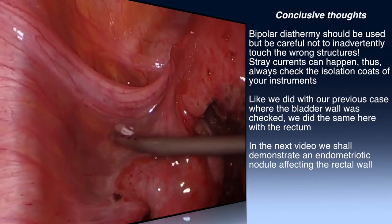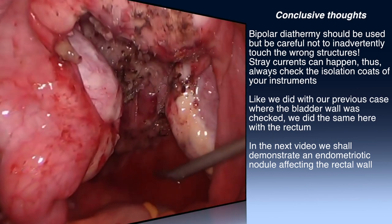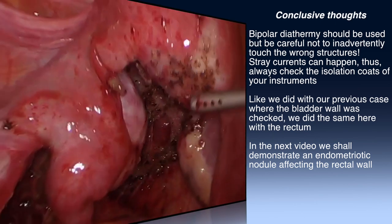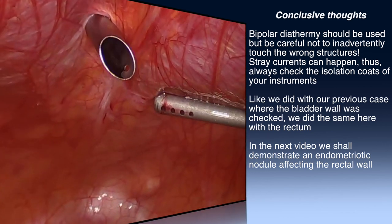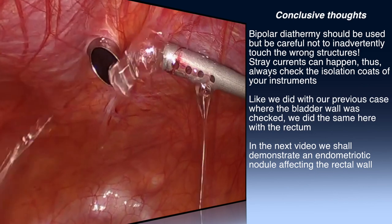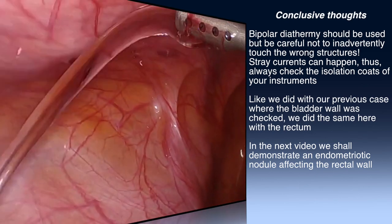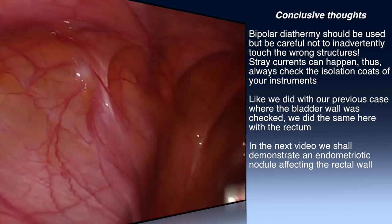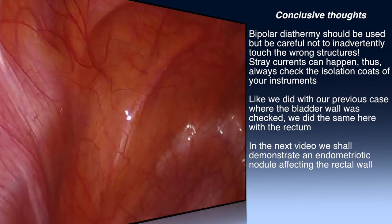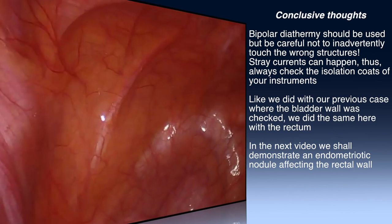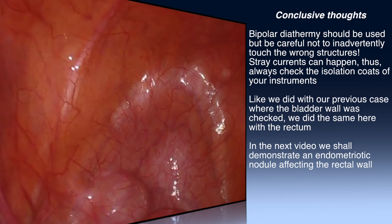Bipolar diathermy should be used but be careful not to inadvertently touch the wrong structures. Stray currents can happen, so always check the insulation coats of your instruments. Like we did in our previous case where the bladder wall was checked, we did the same here with the rectum. In the next video we shall demonstrate an endometriotic nodule affecting the rectal wall, where we shall see the bowel reconstruction as well.